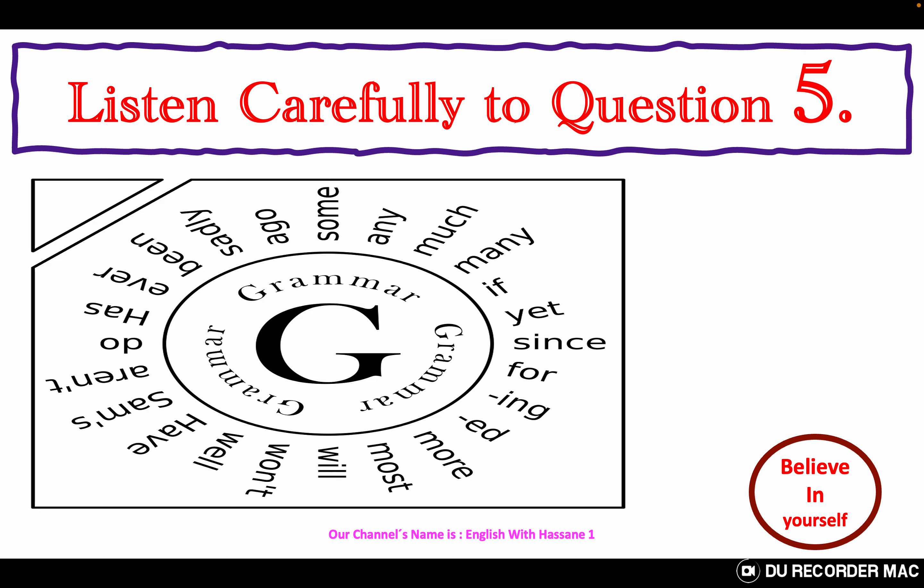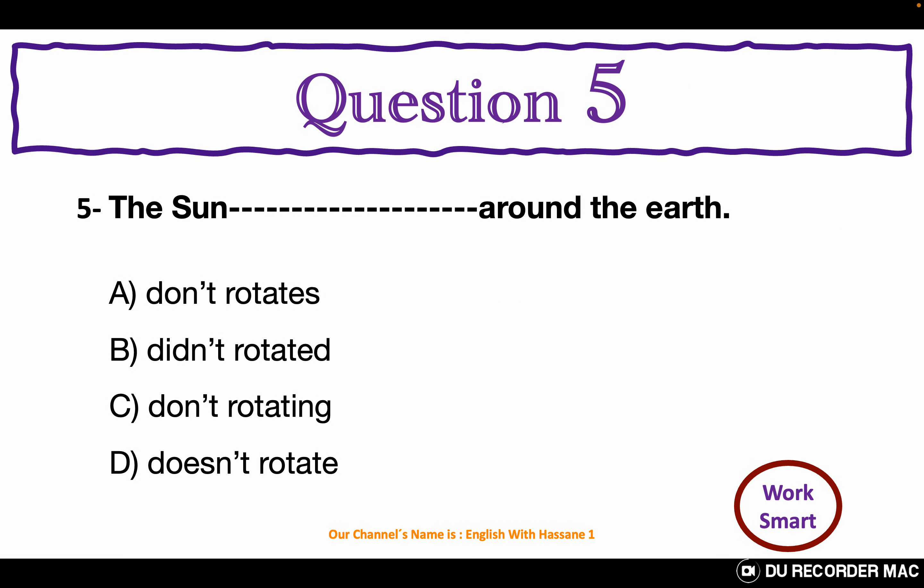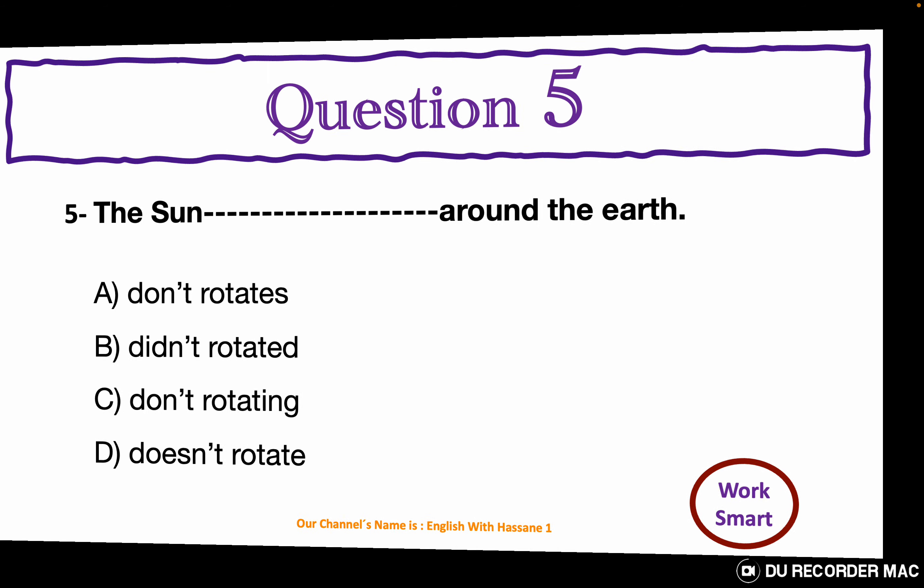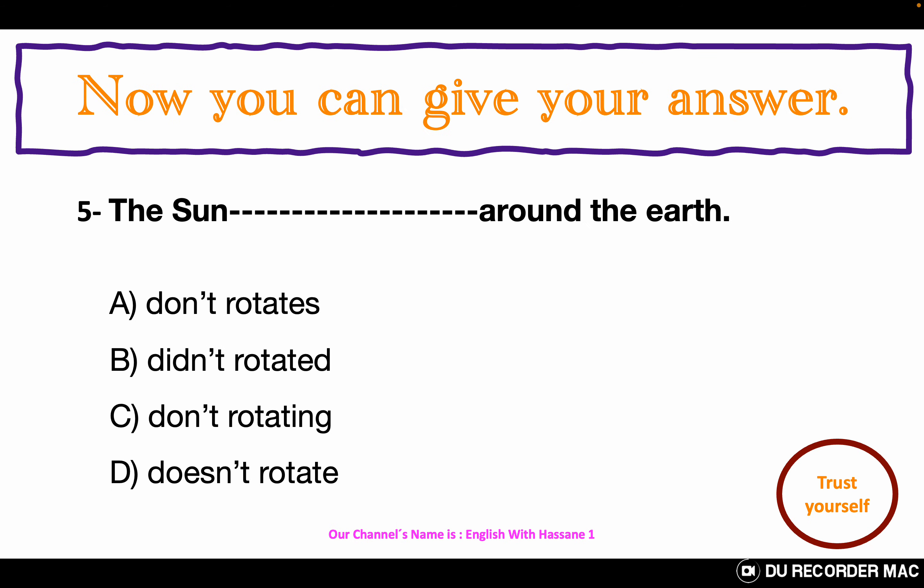Listen carefully to question 5. All the questions of this grammar test are in the present simple negative. Choose the best answer A, B, C, or D. The sun ___ around the earth. A. Don't rotates. B. Didn't rotate. C. Don't rotating. D. Doesn't rotate. Now you can give your answer.